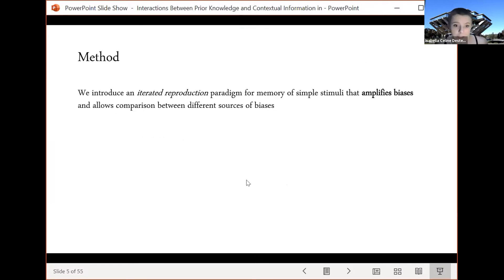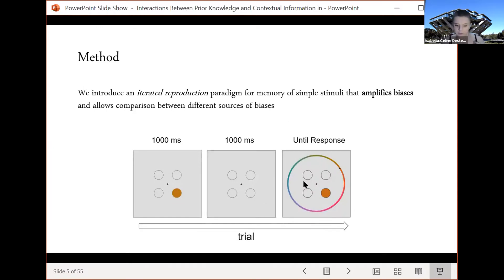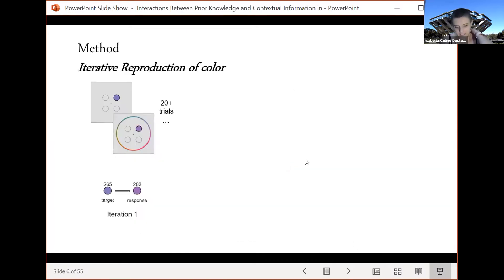We're introducing a novel iterated reproduction paradigm for memory of simple stimuli that aims to amplify biases which will allow us to compare the different sources of bias. On each trial it's a standard continuous reproduction task. Subjects see a color for one second, they remember it over a one second delay, and then are asked to respond what color they remembered using a continuous report color wheel. The novelty in this method is the introduction of iterated chains. The idea is similar to the children's game of telephone or similar to iterated learning tasks except we are doing it within subject.